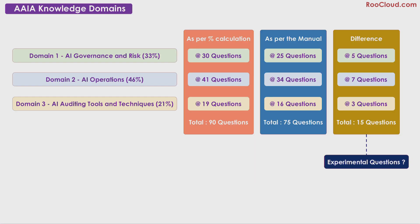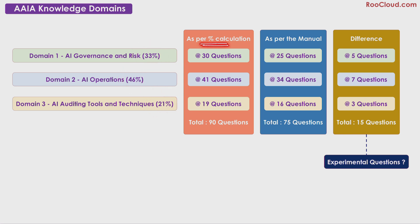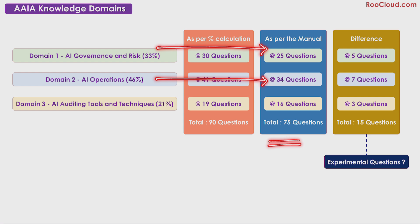Now that we are done with the overview, we can move on to the actual exam topics starting with domain 1 in the next video. You might have noticed something a little curious in the first version of the review manual. The percentages for each of the domains are given, and when we apply those percentages on 90 questions, we get 30, 41 and 19. But under the specific domains, the manual says that domain 1 represents 33% which is approximately 25 questions, 46% for domain 2 which is 34 questions, and 21% for domain 3 which is 16 questions. This adds up to 75 questions.